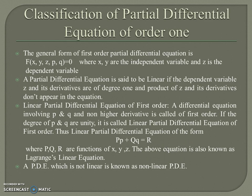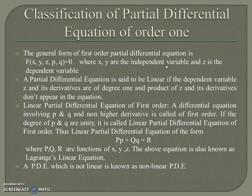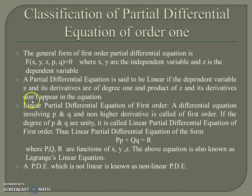Now, classification of partial differential equations. The most general form of a first order PDE is f(x, y, z, p, q) = 0, where x and y are independent variables and z is the dependent variable. A PDE is said to be linear if the dependent variable z and its derivatives are of degree one, and products of z and its derivatives do not appear in the equation.